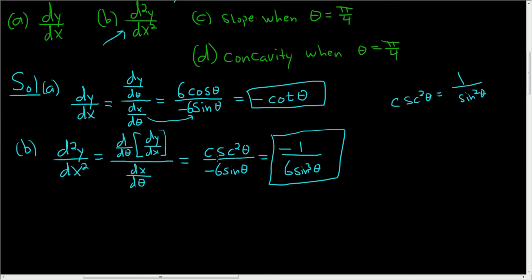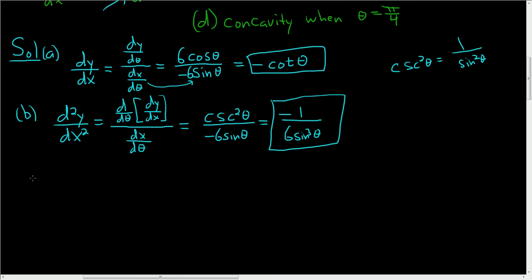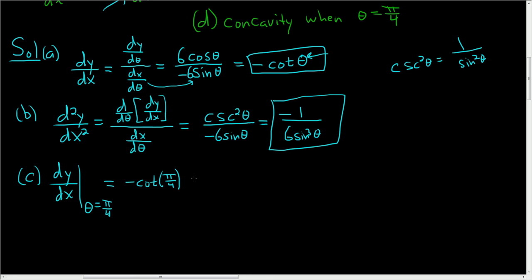Part C wants us to find the slope when θ = π/4. So we want dy/dx when θ = π/4. We plug π/4 into our expression to get negative cotangent of π/4. The tangent of π/4 is 1, and cotangent is just 1 over tangent, so cotangent of π/4 is also 1 — giving us negative 1.